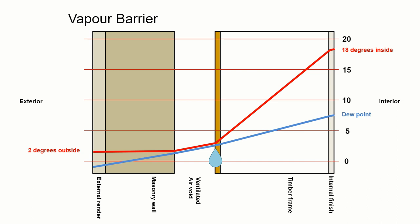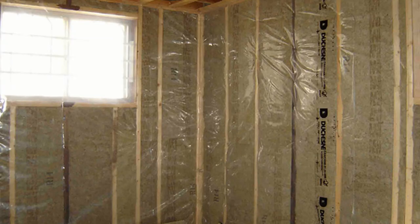So how do we mitigate against this? The most common method within timber frame is to install a vapor barrier, or sometimes called a vapor check or a vapor control layer. All those names are interchangeable.